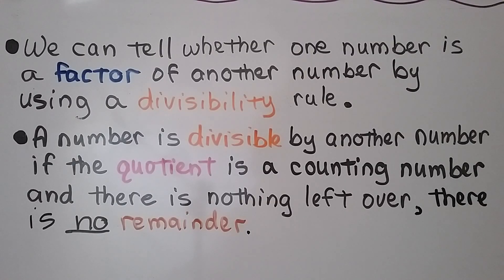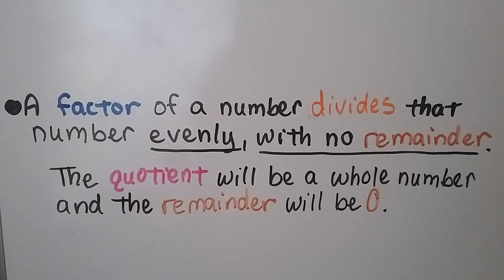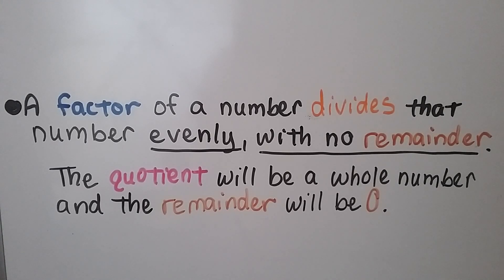We can tell whether one number is a factor of another number by using a divisibility rule. A number is divisible by another number if the quotient is a counting number and there is nothing left over — there is no remainder. A factor of a number divides that number evenly with no remainder; the quotient will be a whole number and the remainder will be zero.